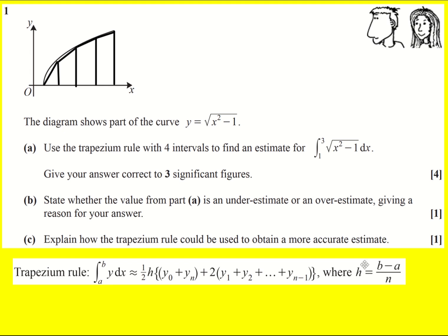So I'm going to write down what h is first of all. So h is going to be b is my 3 and a is 1 and then n is 4, it's going to be 0.5.